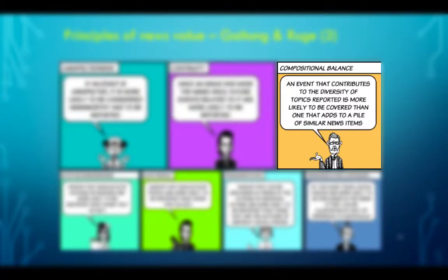Cosmopolitan balance. An event that contributes to the diversity of topics reported is more likely to be covered than one that adds to a pile of similar news items. This may sound a little opposite to what we have just said. However, journalists as human beings like variety — not just routine and patterns — and therefore if they come across a story that has new meaning and provides something new to their audience, they will be happy to cover it.